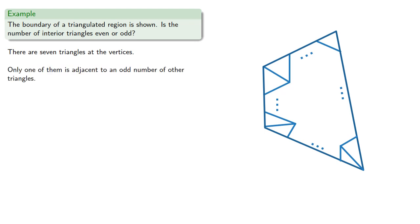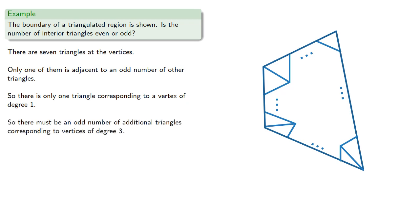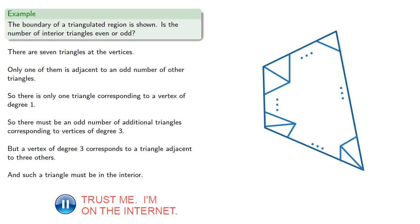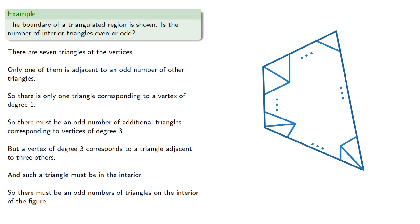Only one of them is adjacent to an odd number of other triangles. So there's only one triangle corresponding to a vertex of degree 1, so there must be an odd number of additional triangles corresponding to vertices of degree 3. But a vertex of degree 3 corresponds to a triangle adjacent to three others, and such a triangle must be on the interior. So there must be an odd number of triangles on the interior of the figure.